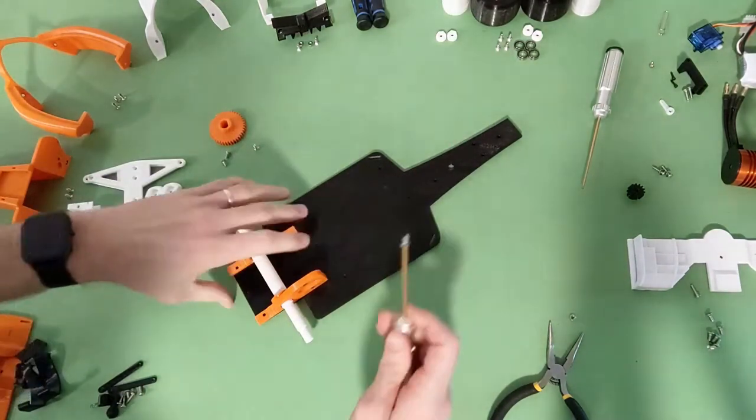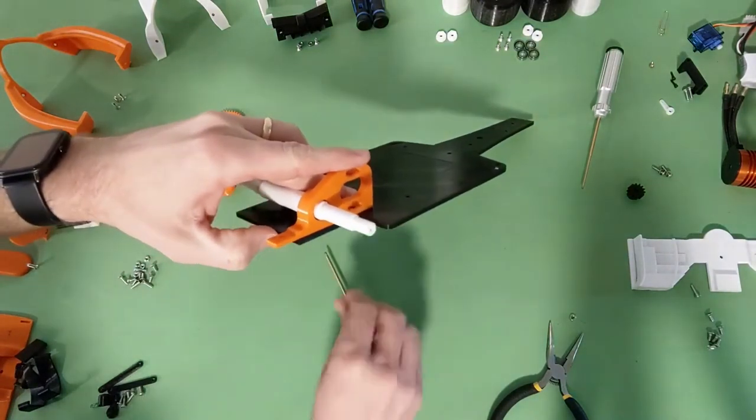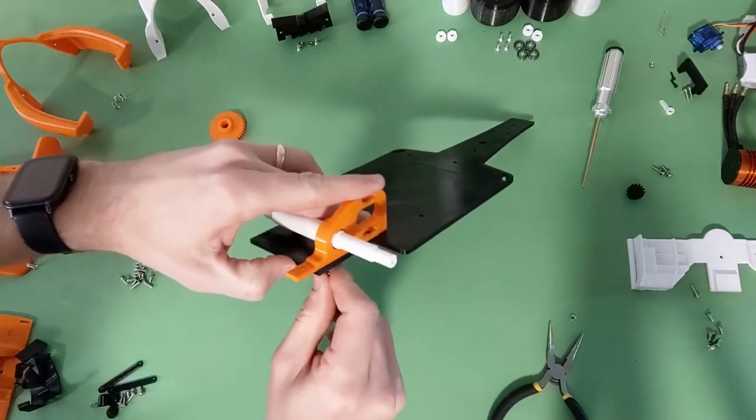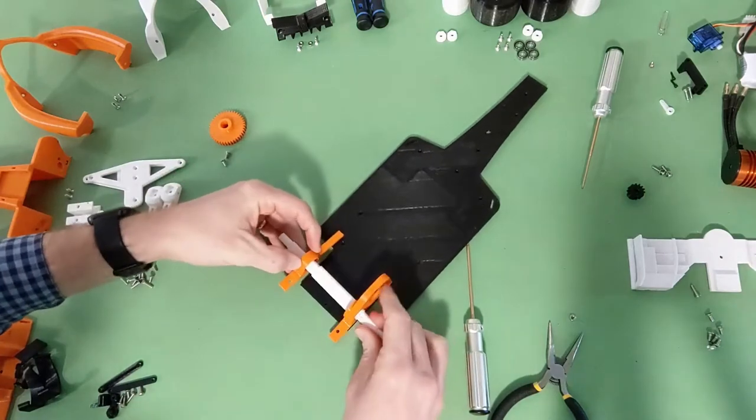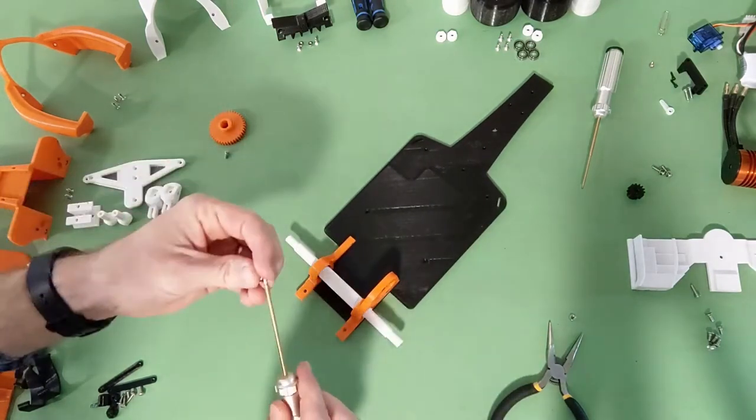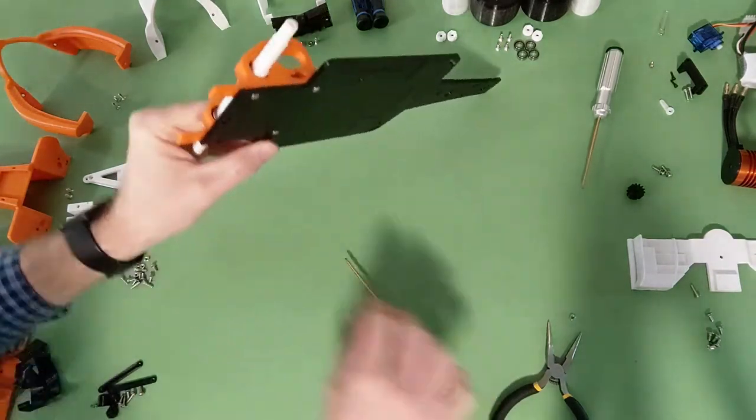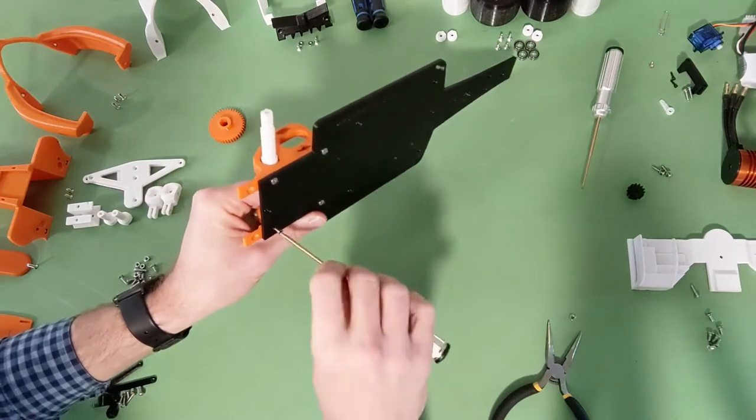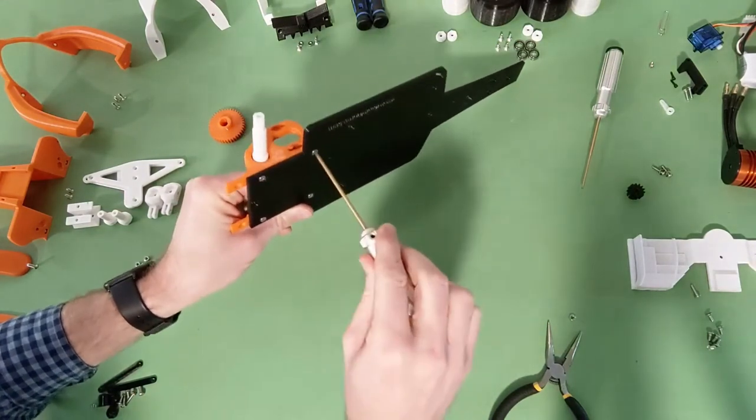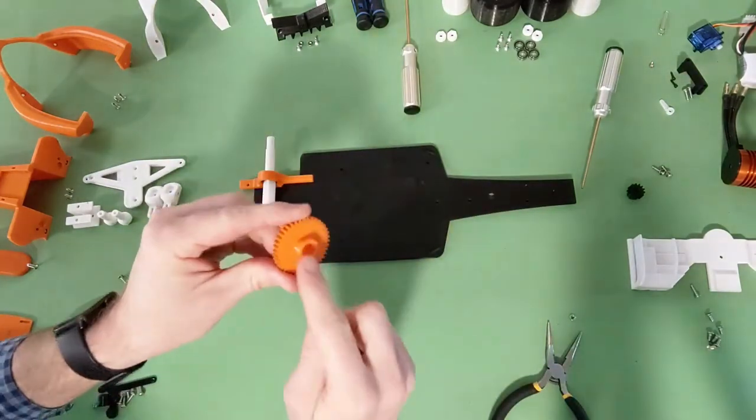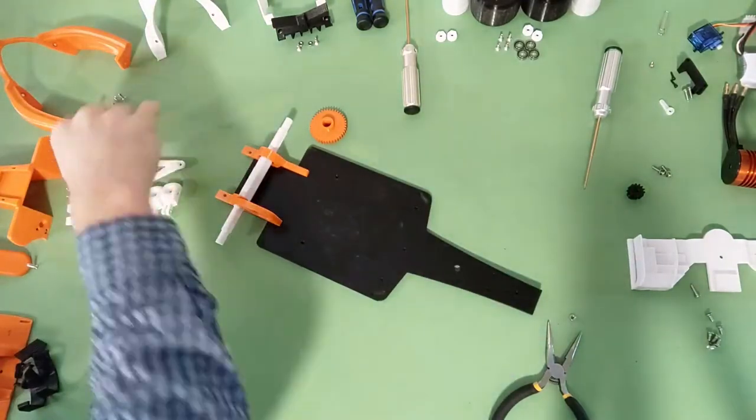Then we're going to work to mount the rear axle assembly to the chassis plate. So that's going to take four M3 by 8 screws. Just like that, and then you can add your spur gear. Just slides right on to the right hand side. Mine kept slipping off so I'm just going to remove it for the time being.